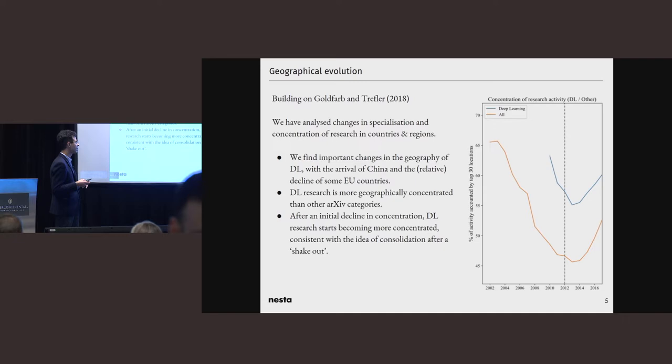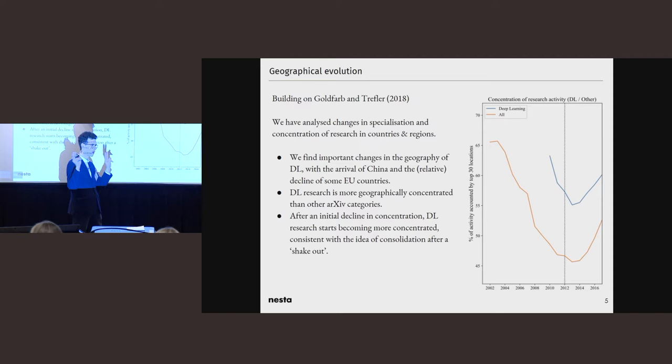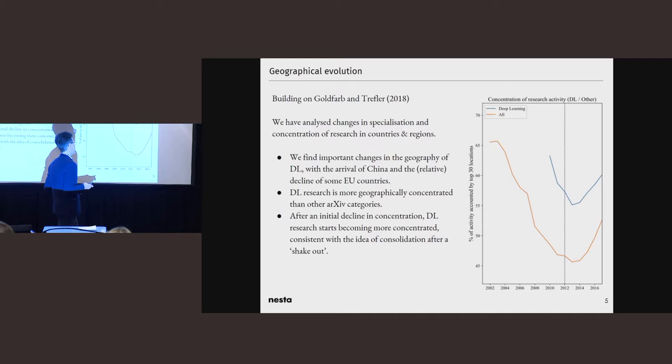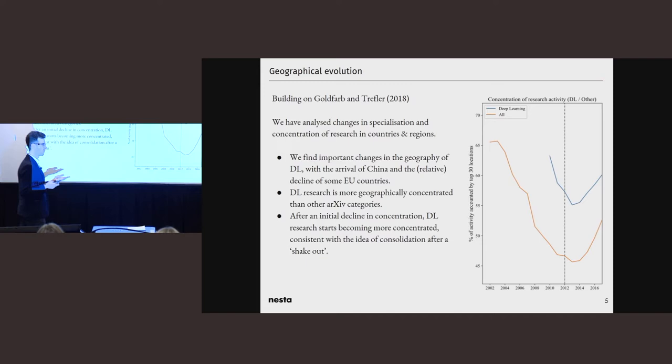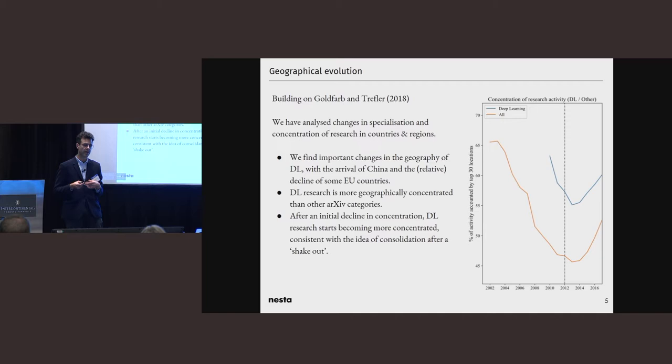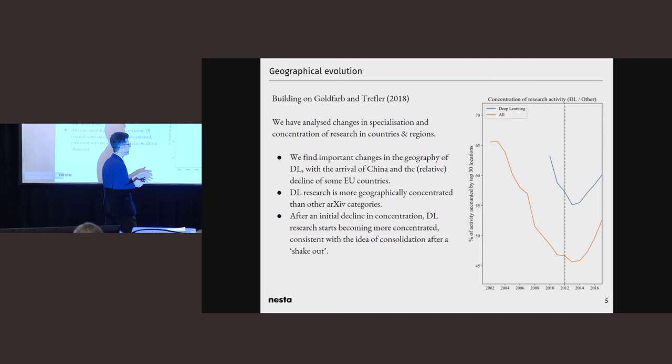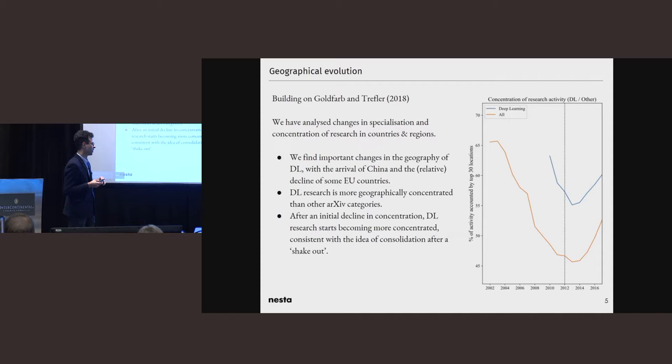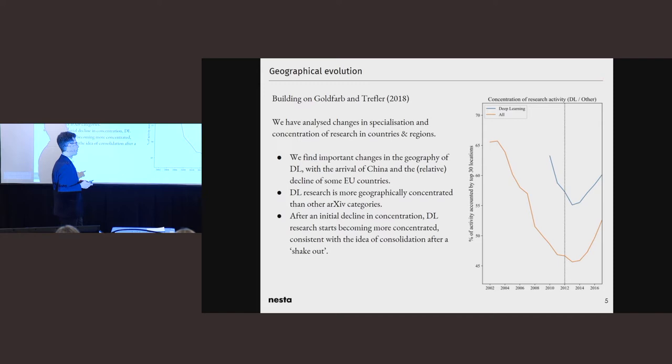When we look at changes in concentration, and this is really interesting, remember 2012 is something that was very prominently featured in Jack's presentation yesterday as the arrival of deep learning. We see that up to the point when deep learning arrives, there was a decline in the level of deep learning research activity accounted by the top locations. And then from 2012, we start to see very rapid consolidation, and actually deep learning becoming more concentrated. We link this to the idea that there was a new technology emerging being developed, a lot of exploration, a lot of experimentation, many different clusters exploring this method. And then over time, a dominant design arrives, and a few R&D clusters in AI start to become dominant.